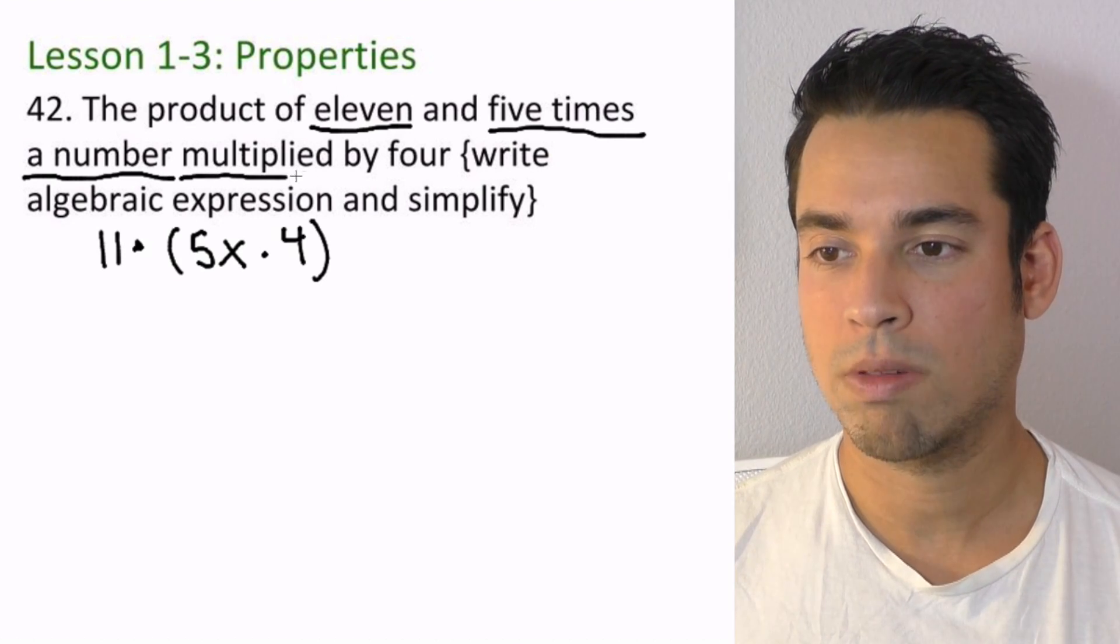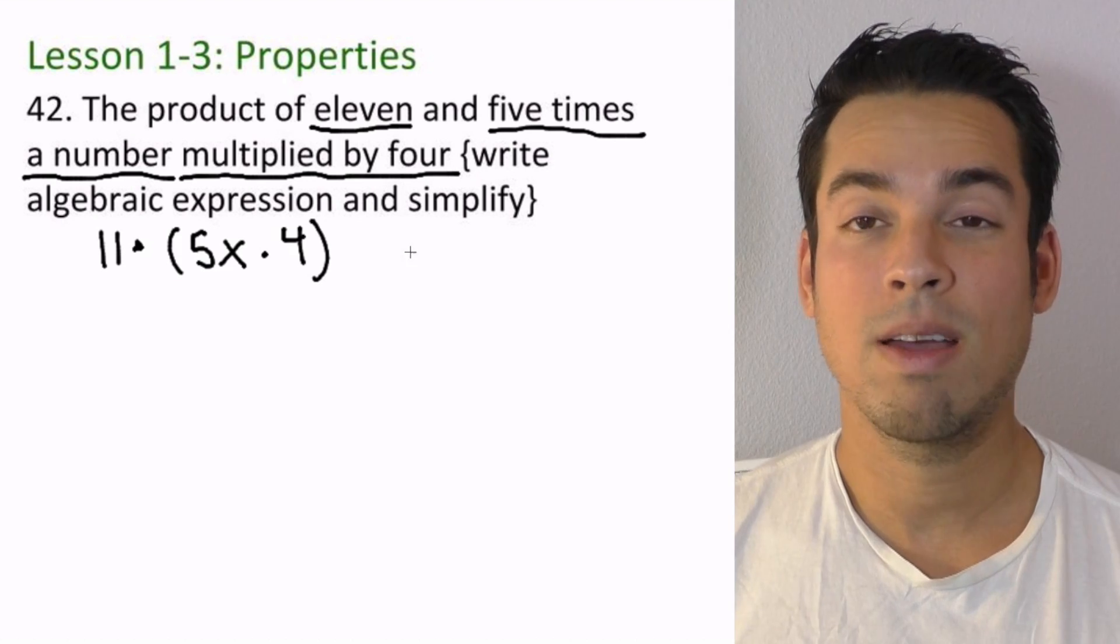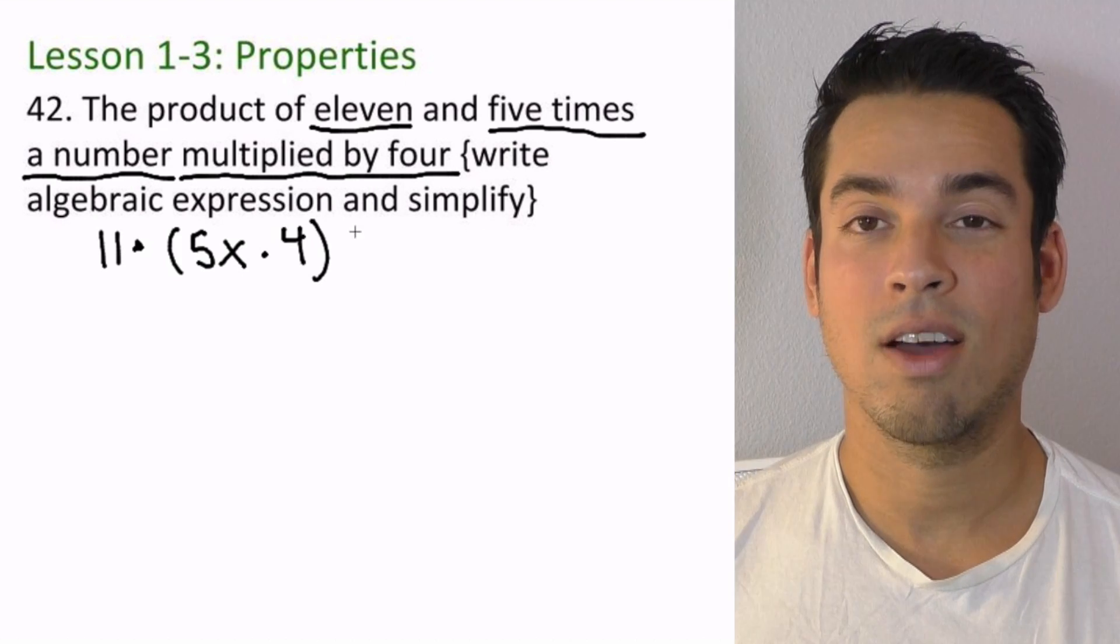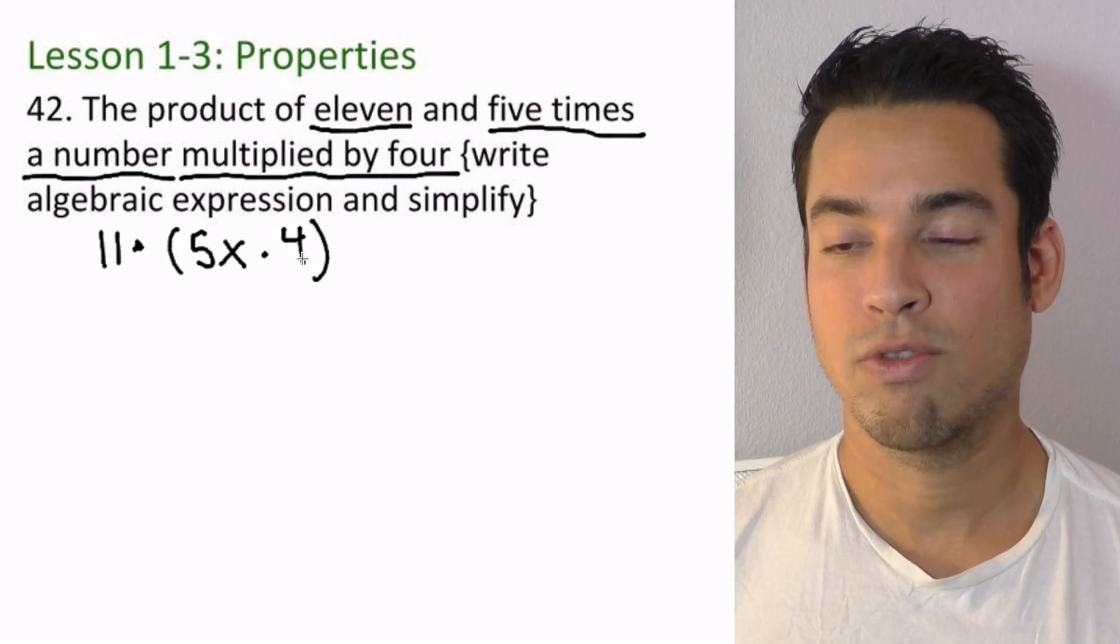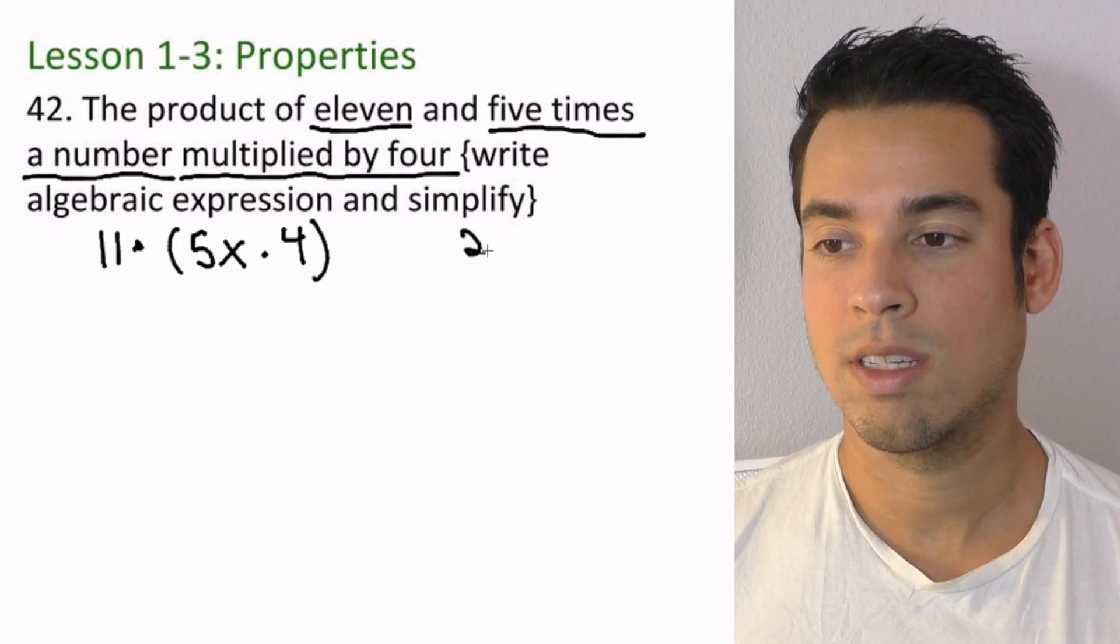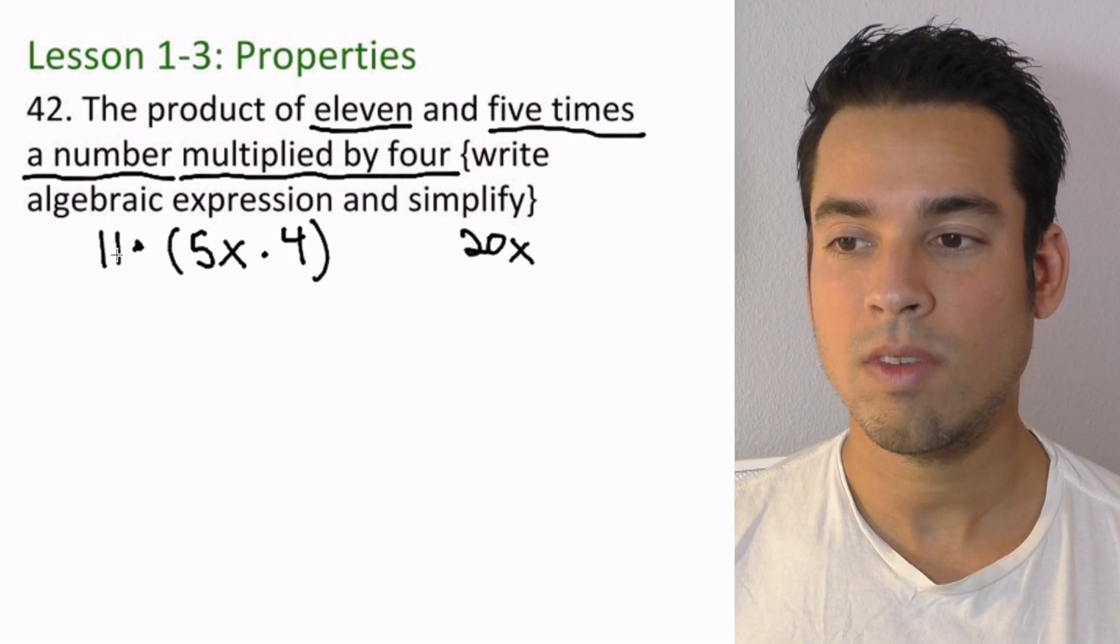And now we just want to simplify, meaning we go ahead and carry out all this multiplication. So first, what is 4 times 5? That is 20x. And we still got that 11 lingering on the outside.